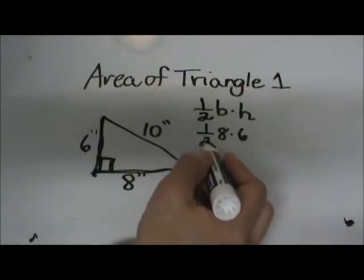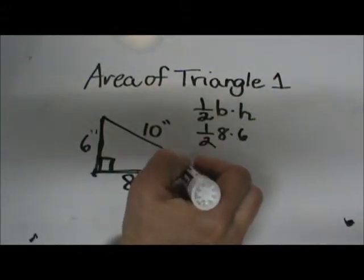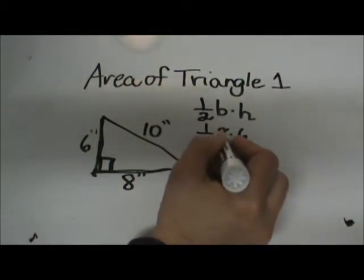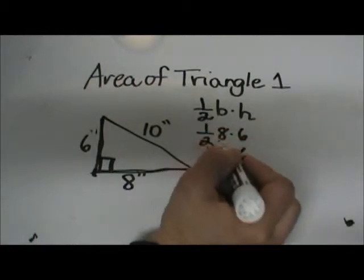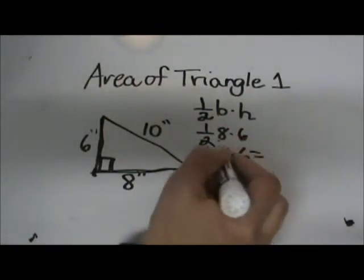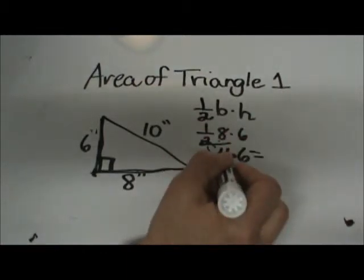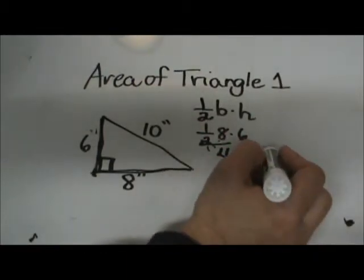Now you have a couple choices here. You can take half of 8, which seems to be the simplest - half of 8 is 4, and then times 6. Or you can multiply 8 times 6 and then divide it by 2. Either way, I like to simplify first. So half of 8 is 4, and then 4 times 6 is 24.